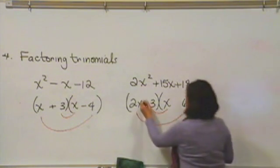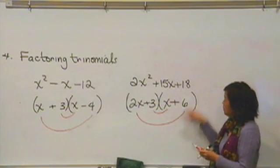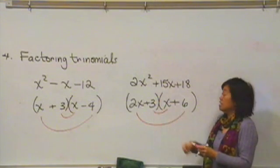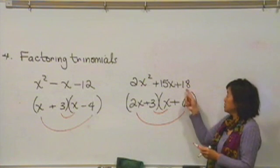Let's make them both positive and make sure that that works. So here we have a 12x and a 3x, which is 15x. And then if we check at the end, positive 3 times positive 6 is 18.